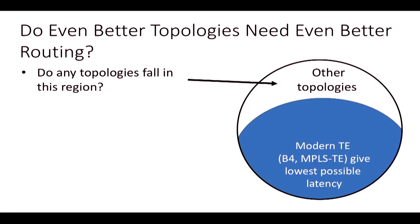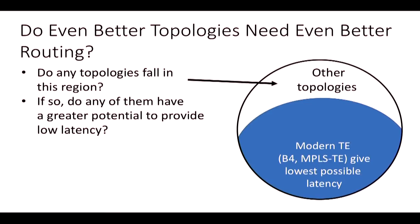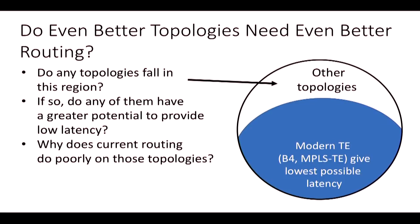Do we have any topologies for which modern traffic engineering does not give the lowest possible latency? And more importantly, do any of those topologies have potential for low latency? I'm going to provide a proof by example that such real-world topologies exist. Here is the topology of GTS, the central European network—part of it from 2010. We have looked at over a hundred different topologies spanning a decade.